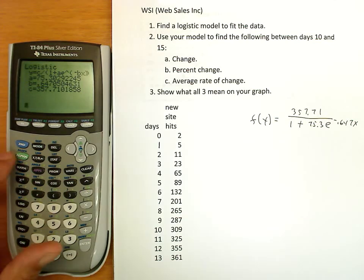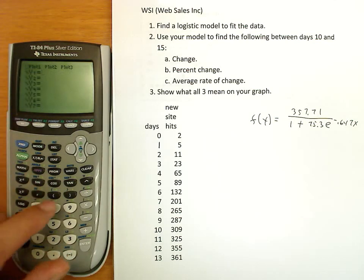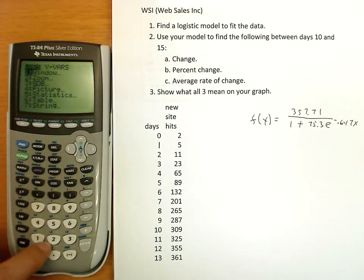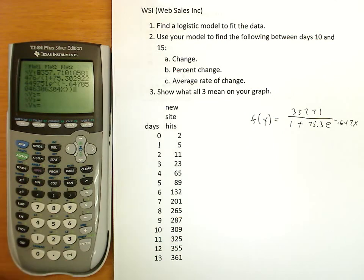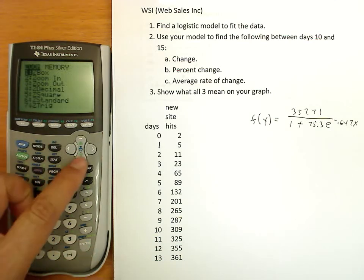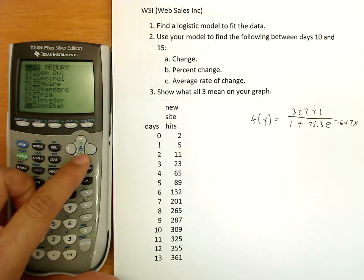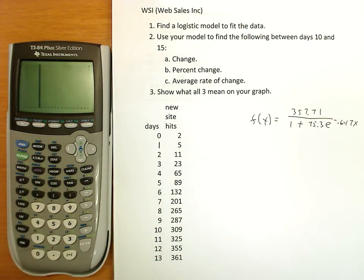We want to graph that model. We're also going to graph our data. So I'm going to press y equals. Now to make the model jump in so I don't have to type it in, I press variables. Number five is statistics. Move to equations. And voila, the equation jumps in without the problem of typing it.